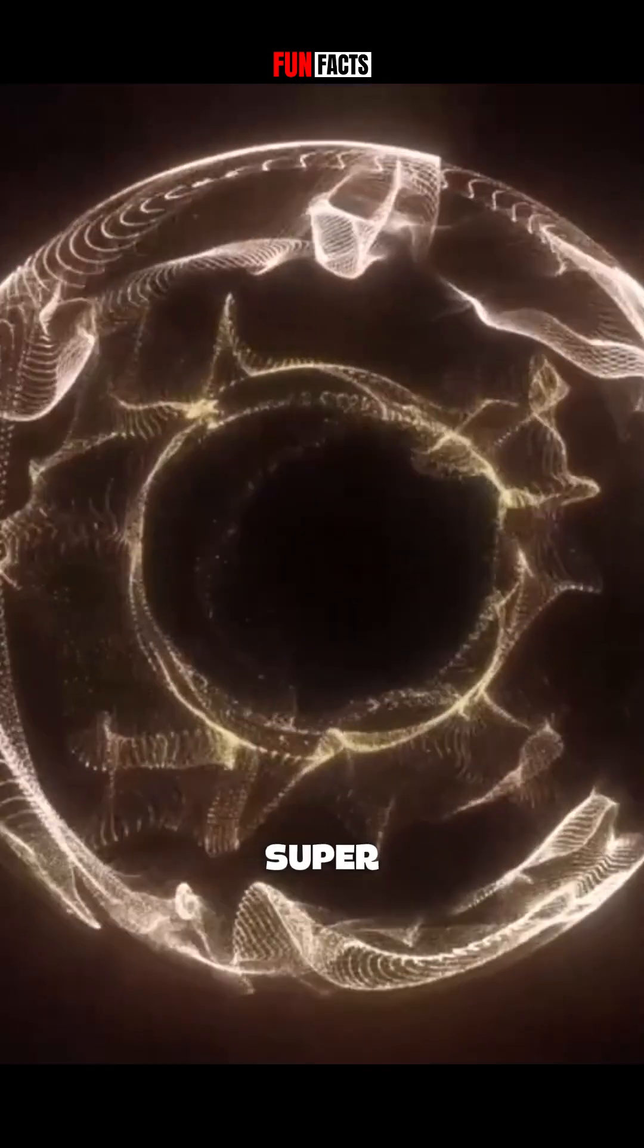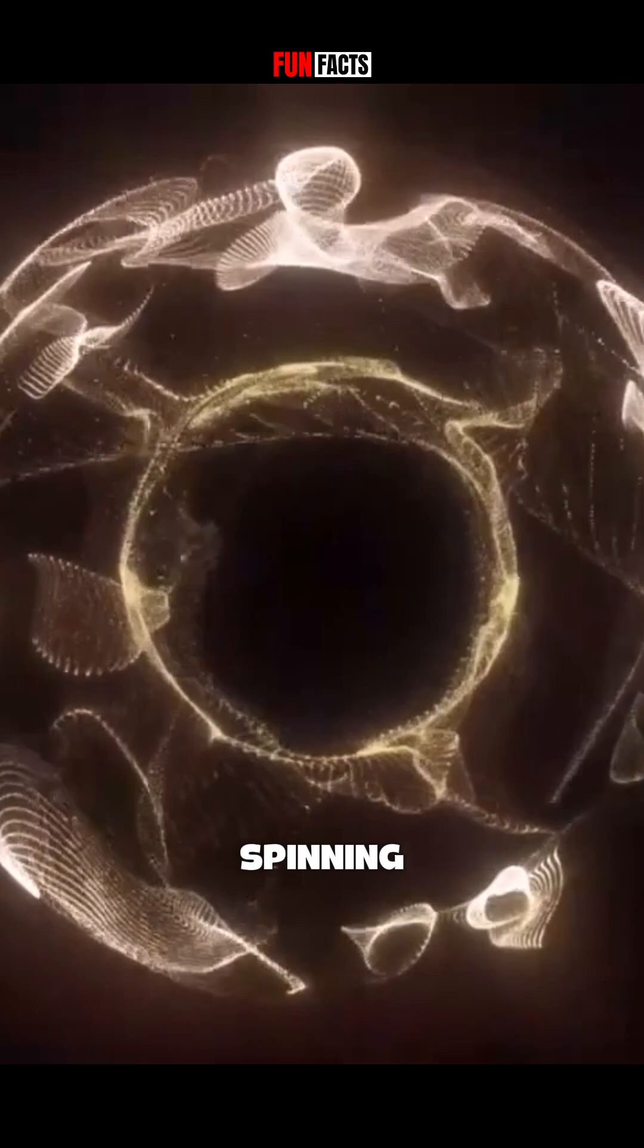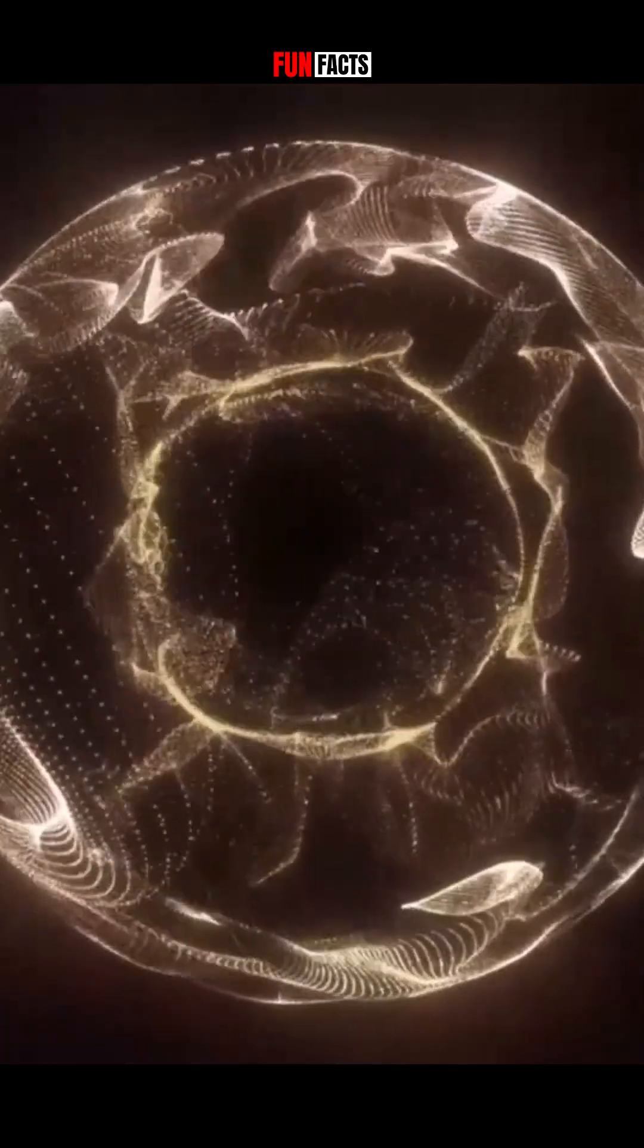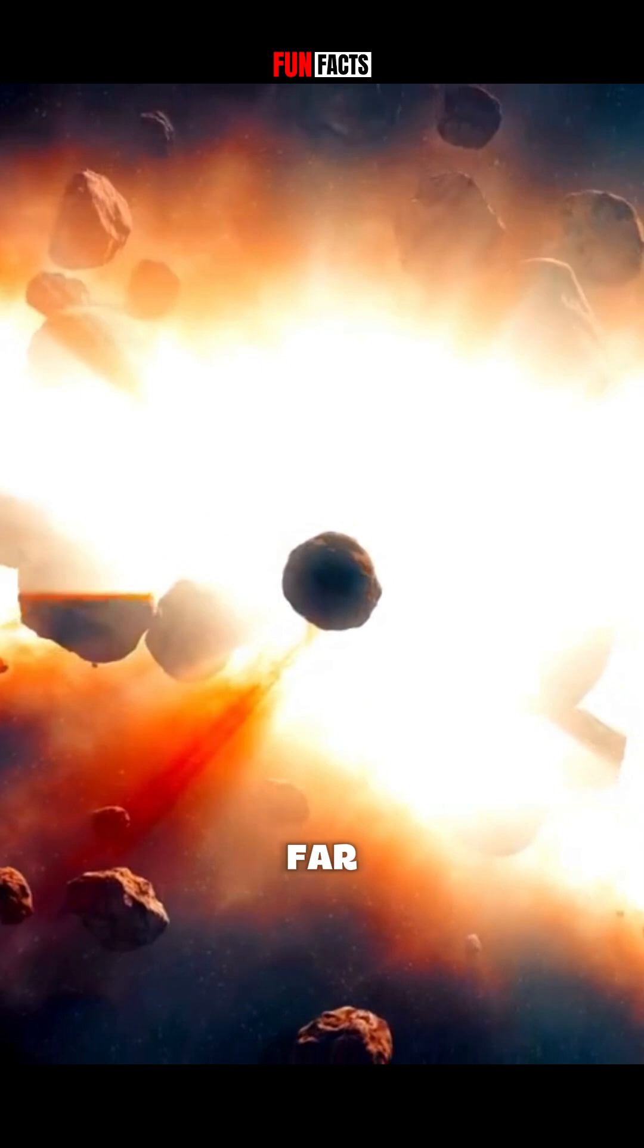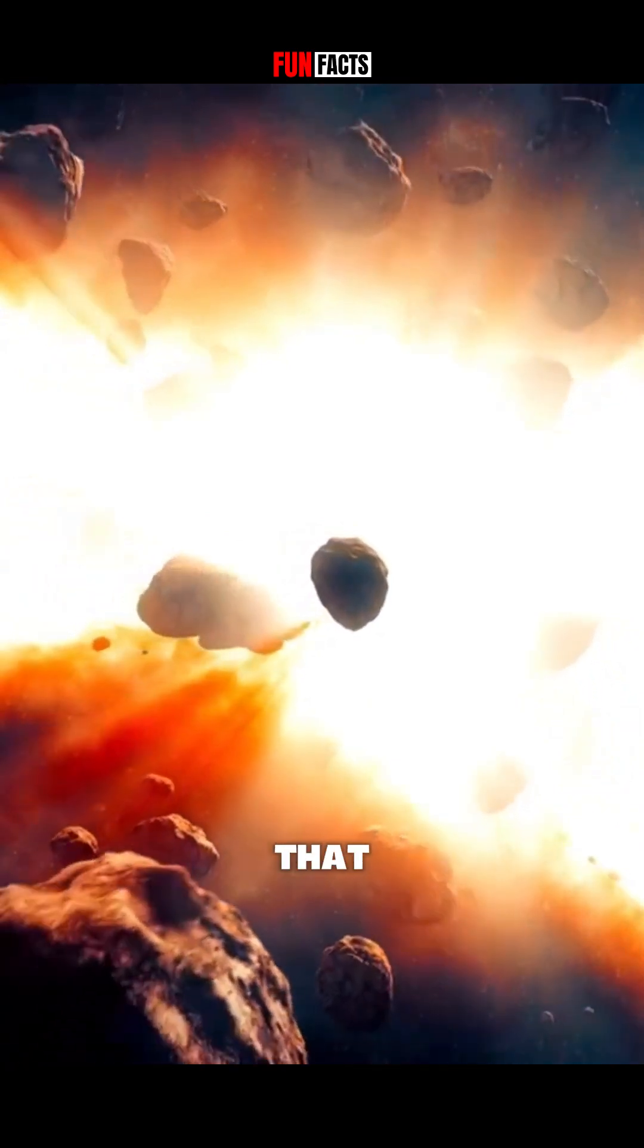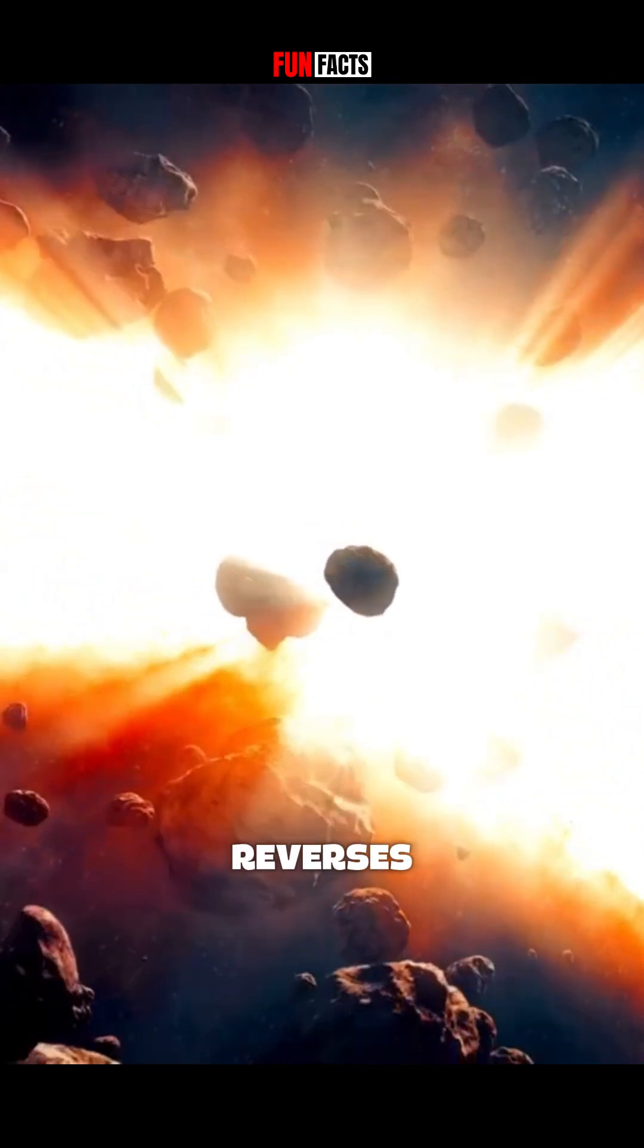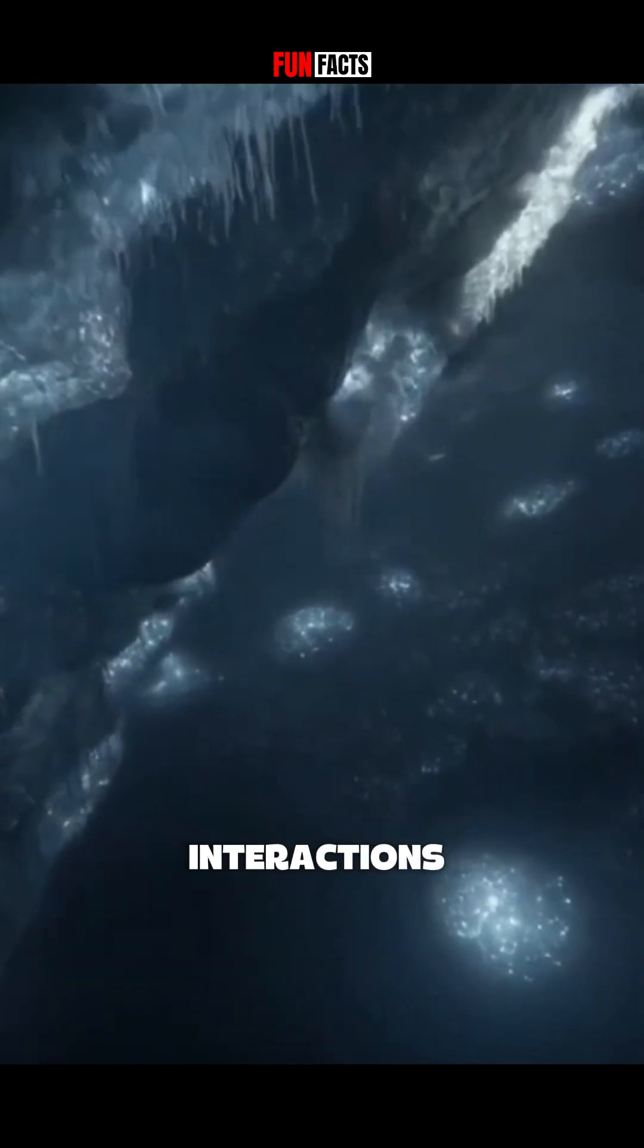The old idea of superrotation, the core spinning faster than Earth, is being rewritten. Recent models suggest a far more chaotic system, one that accelerates, stalls, and reverses based on complex, deep-Earth interactions.